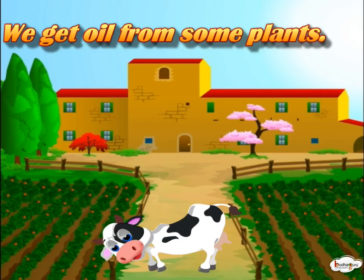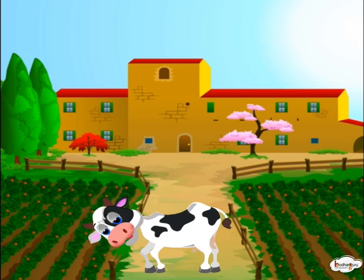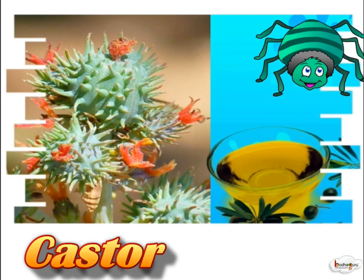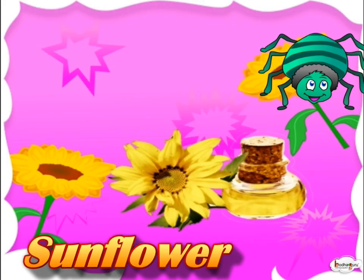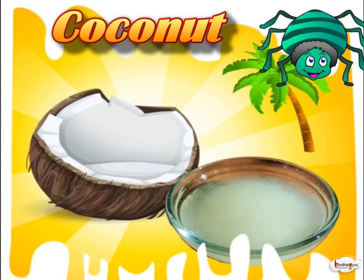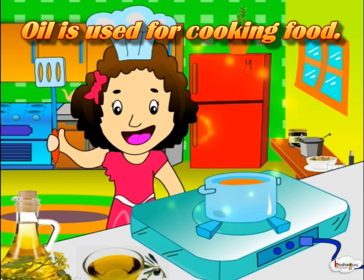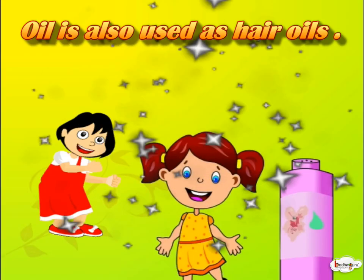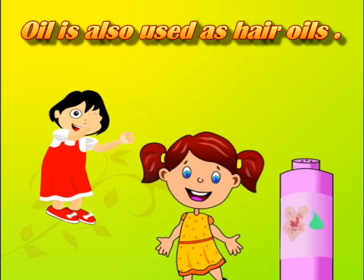We get oil from some plants. Some of the plants that give us oils are castor, sunflower, mustard and coconut. Oil is used for many purposes. It is used for cooking food. Some oil is also used as hair oil.